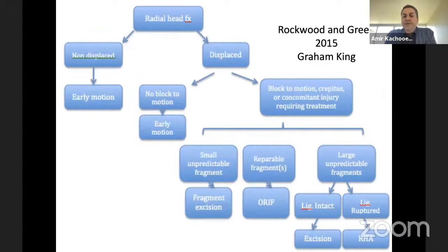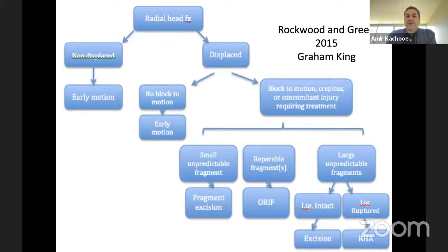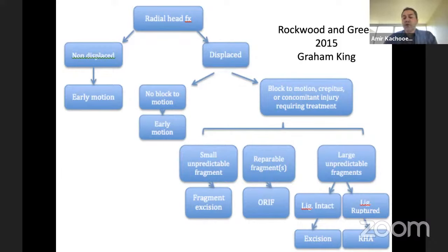I'm going to use this diagram published in Rockwood and Green's 2015 by Graham King. They classified radial head fractures into displaced and non-displaced, and based on motion block. We'll use this diagram along the talk to see how we can manage radial head fractures.